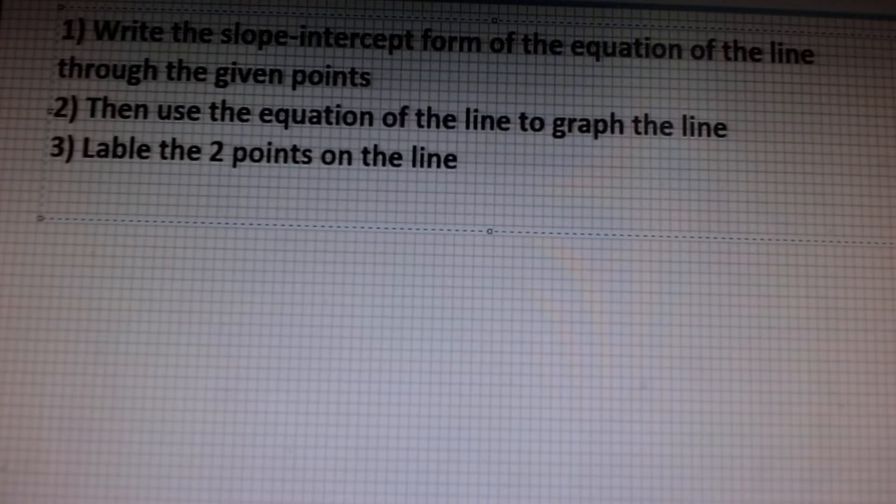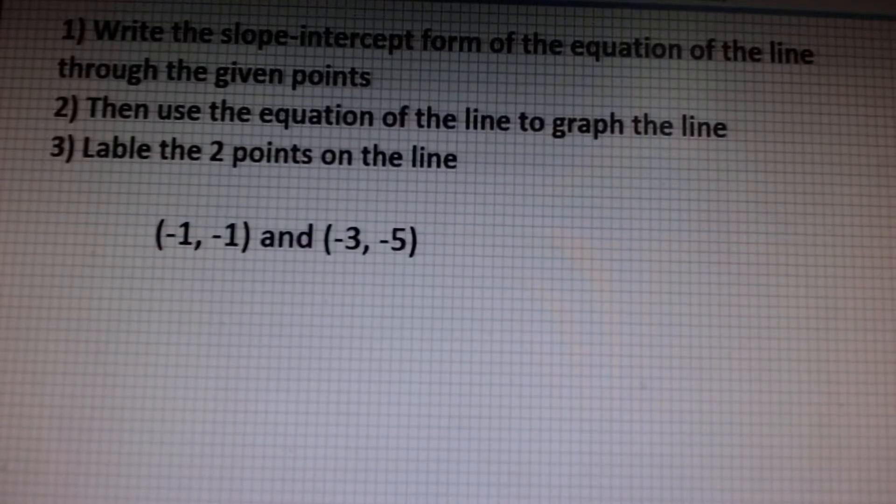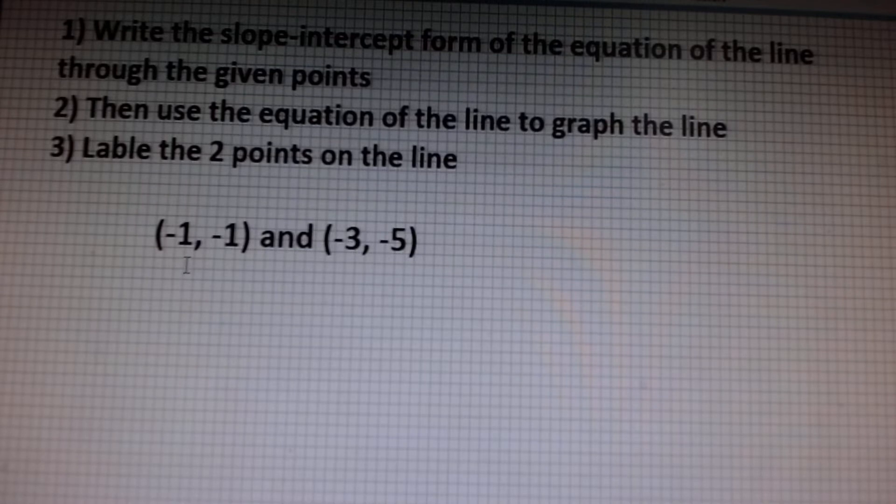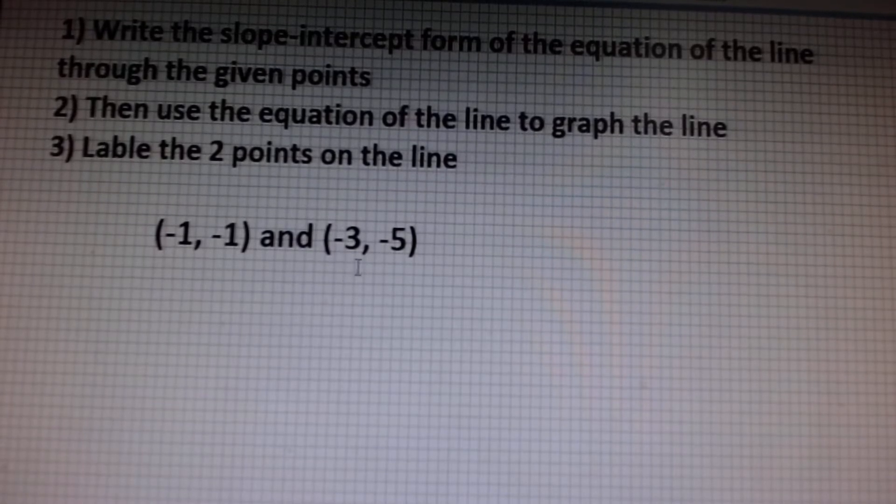So, let's say my coordinates are negative 1 and negative 1, so x is negative 1, y is negative 1, and the second set of ordered pairs is negative 3, x is negative 3, and y is negative 5.